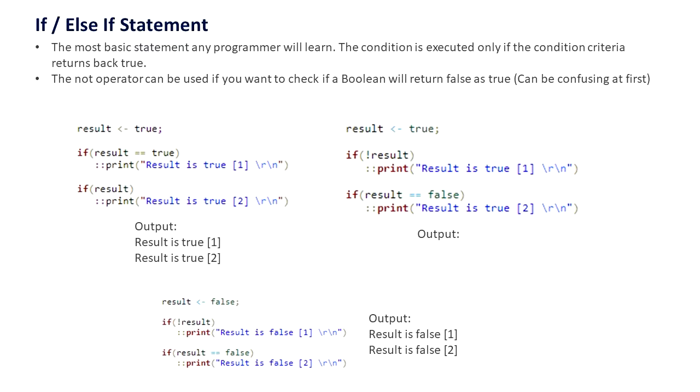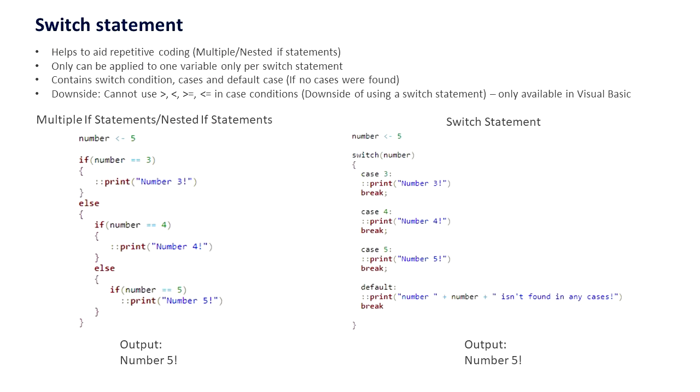Here's the same but with false and the double marks. The second proper one is the switch statement. It helps to aid repetitive coding, prevents nesting or multiple if statements.